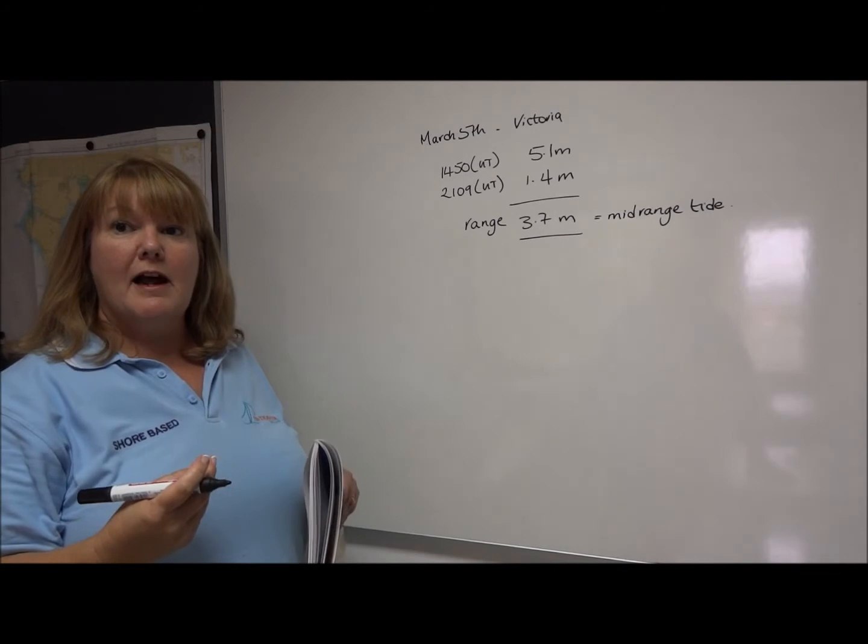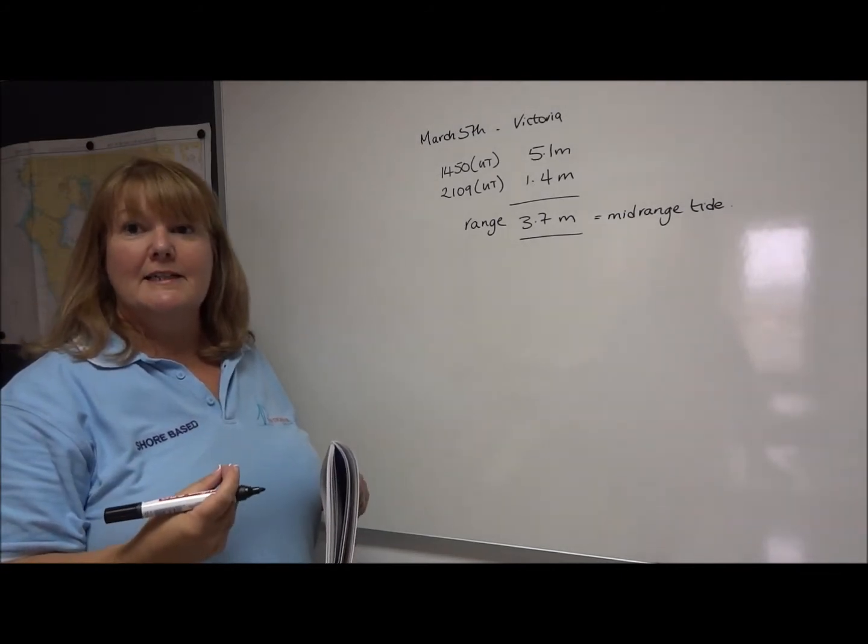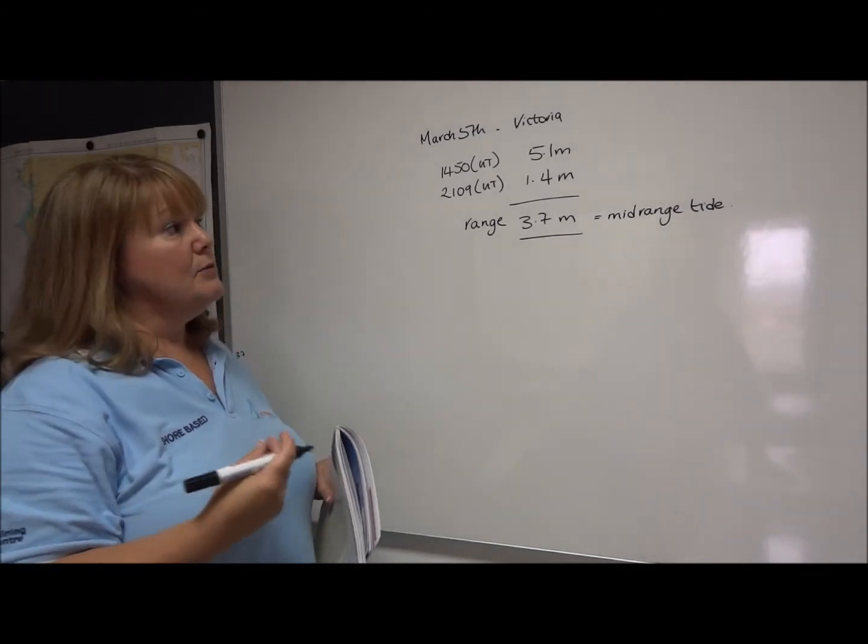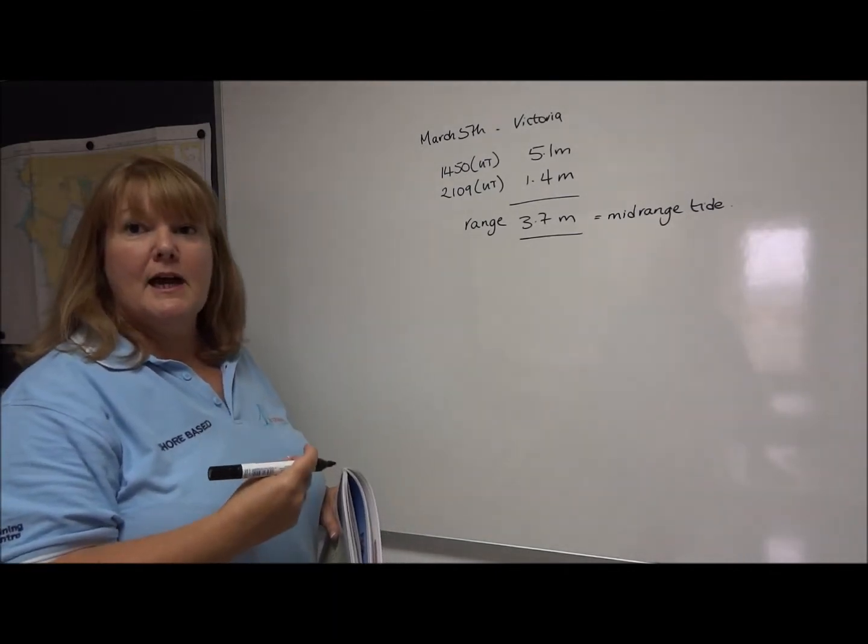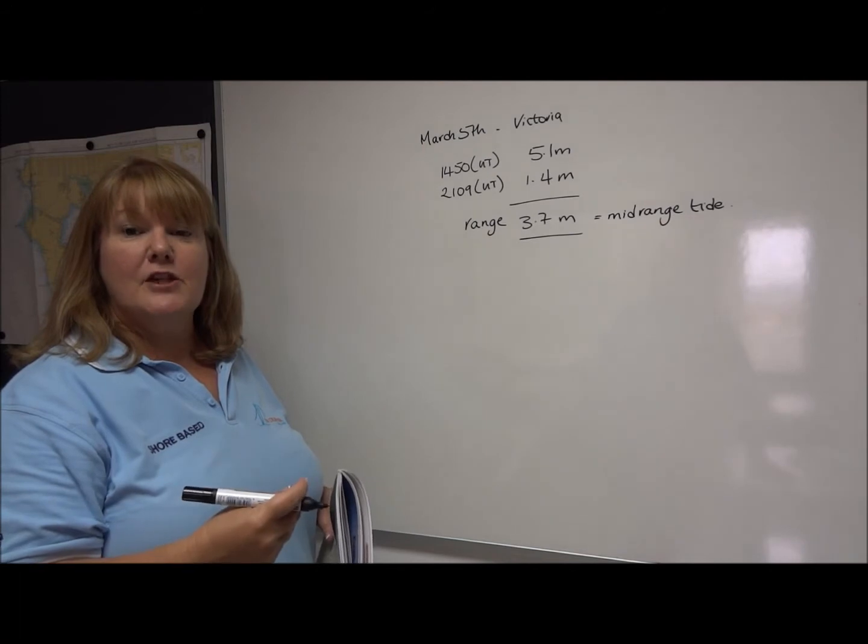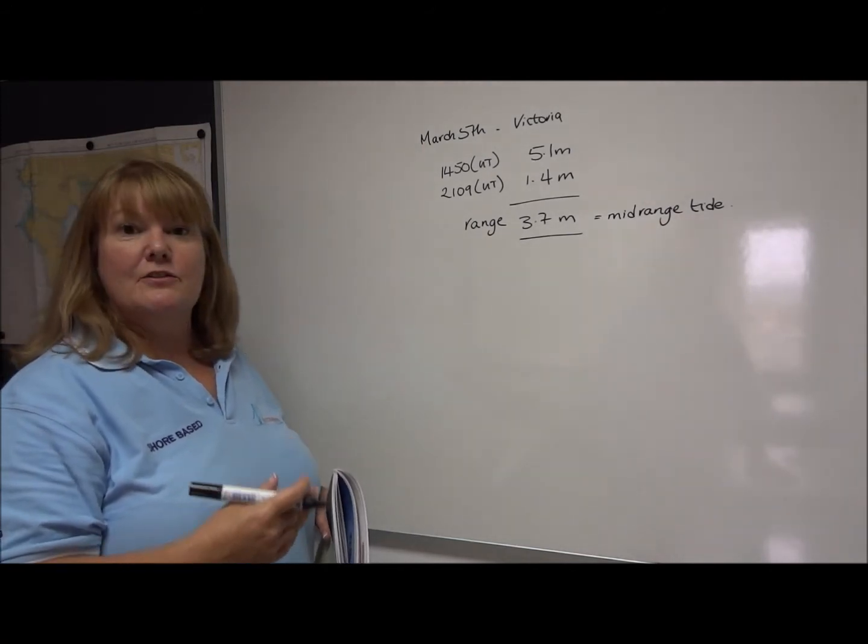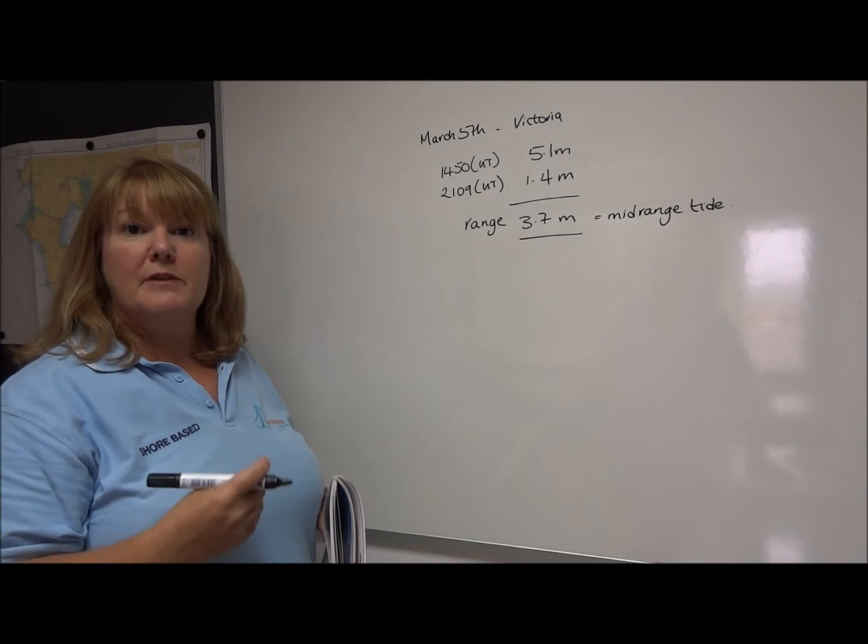So to summarise, the first thing when we are calculating tides is that we need to work out whether we are on a spring tide, a neap tide or a mid-range tide. And then we can do our calculations for everything else from this point.